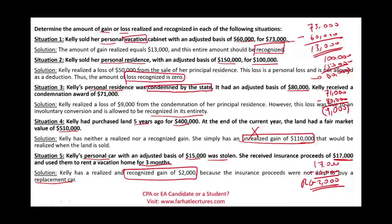Go to Farhat Lectures for additional MCQs and true-false questions to help you understand this topic. This comprehensive example covered realized gain on a personal residence, realized loss on a personal residence, and realized gain or loss from a condemnation or involuntary conversion. Each scenario was also covered in a separate recording. Make sure you understand deferred gains, deferred losses, and when gains or losses are disallowed — a very important topic on the CPA and enrolled agent exams. Good luck, study hard, and stay safe.